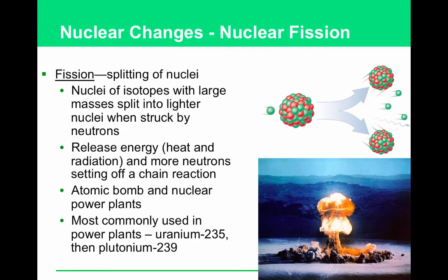How does nuclear fission create energy? Fission — F-I-S-S-I-O-N — is the splitting of nuclei. You send a neutron in like a bullet, it hits an atom of uranium-235, which splits it apart. Energy is what's keeping it together, so splitting it releases energy and more neutrons. Those go out like bullets, creating a chain reaction — releasing heat, radiation, and more neutrons in a runaway chain reaction without control devices.